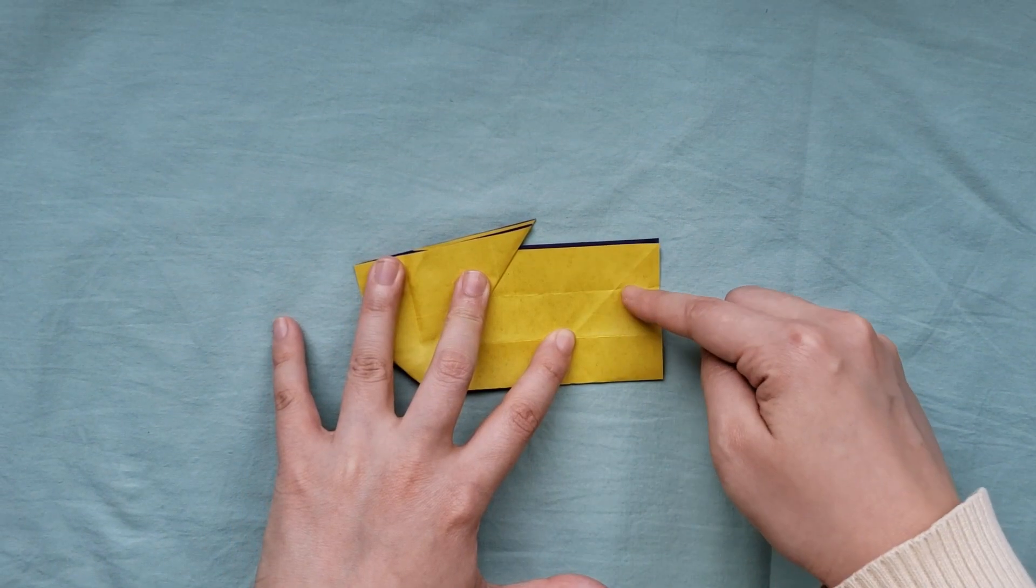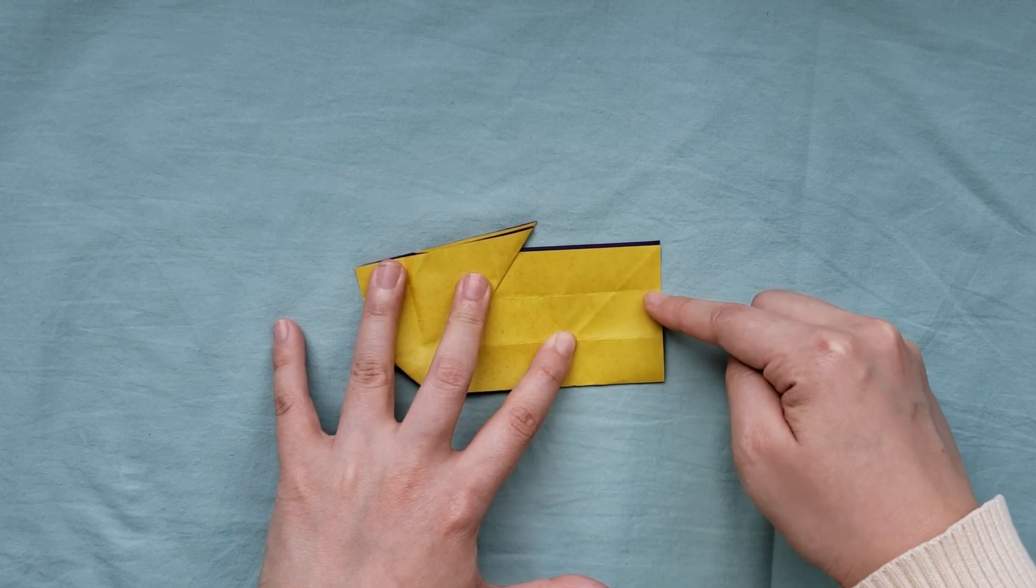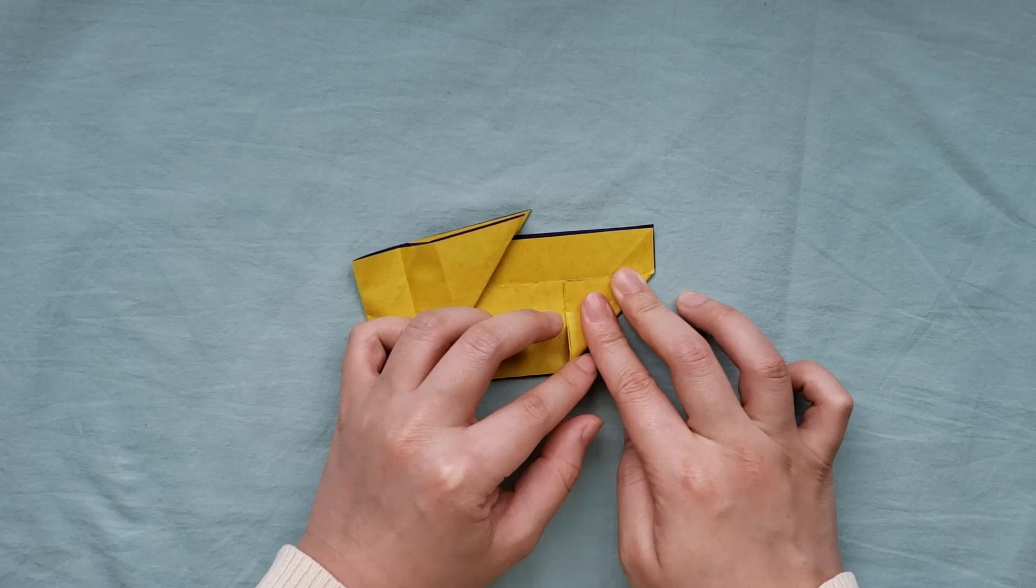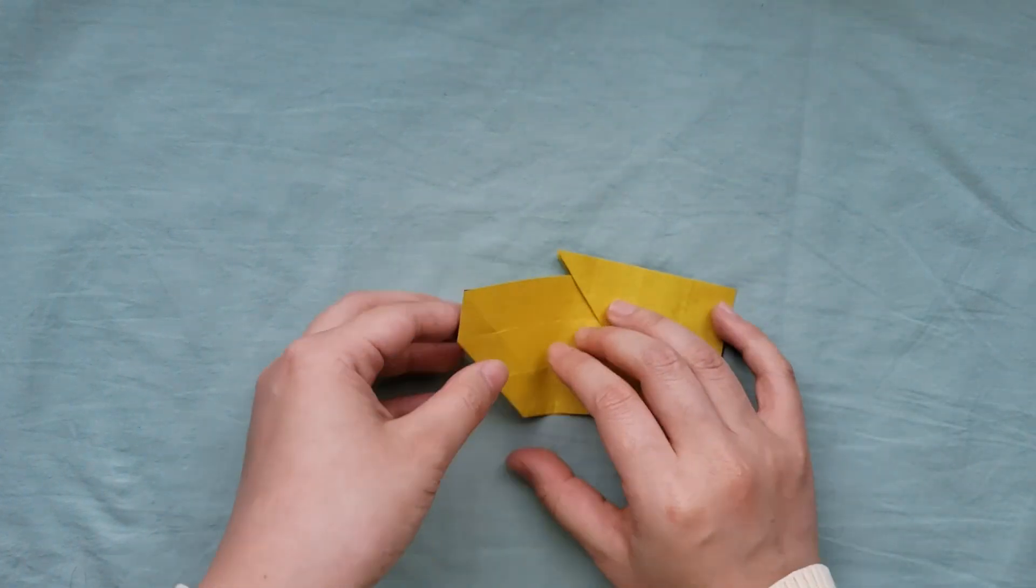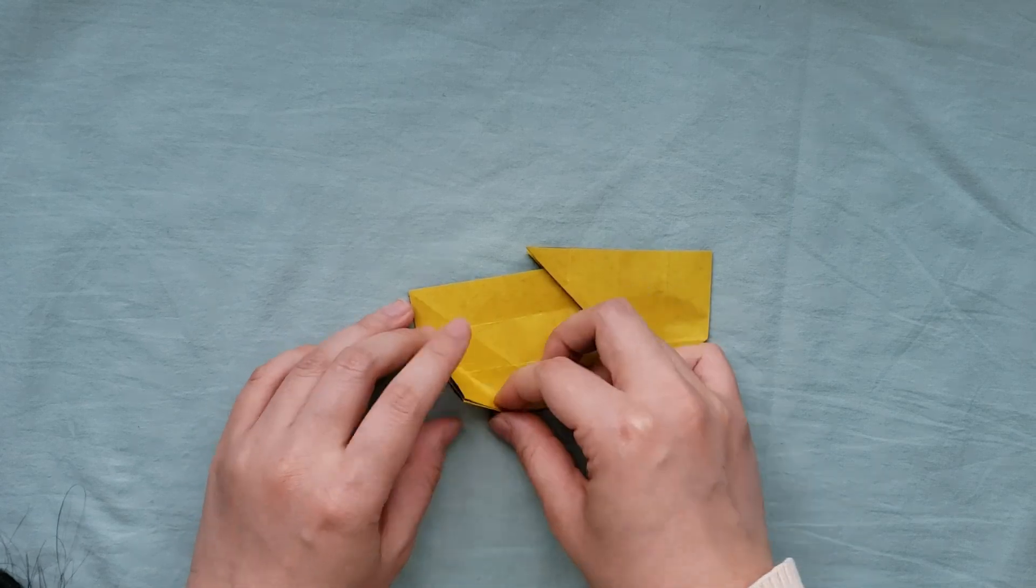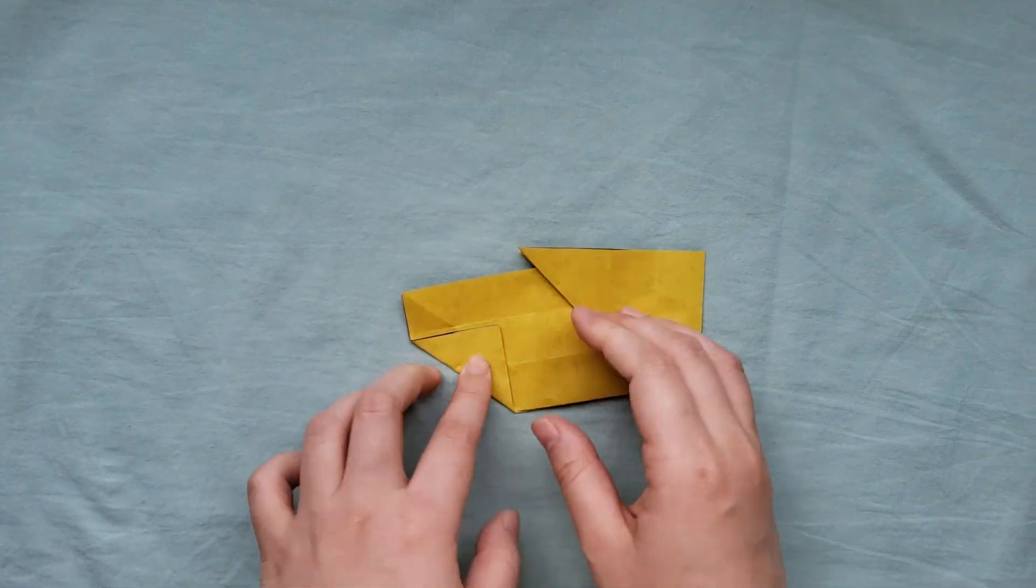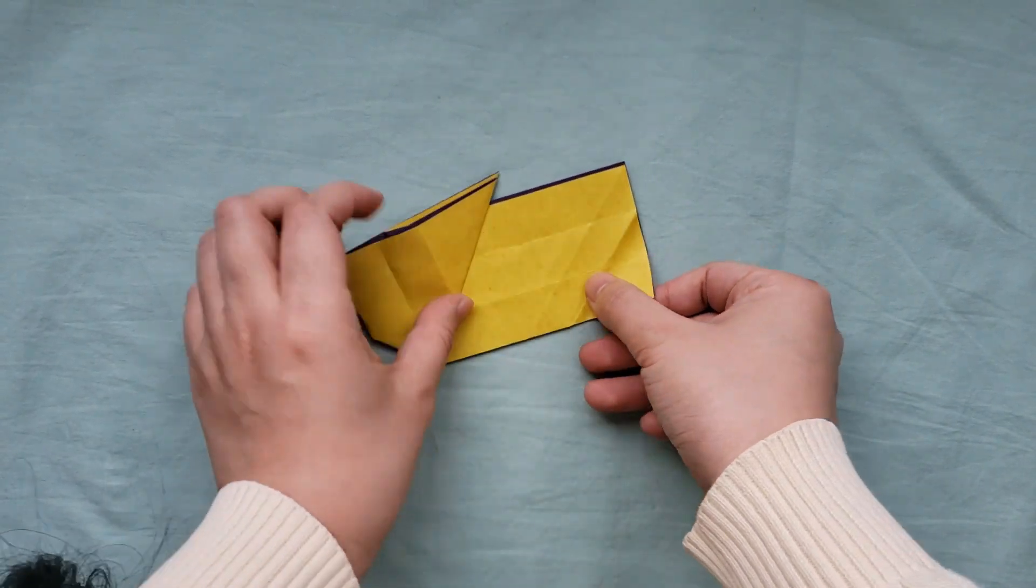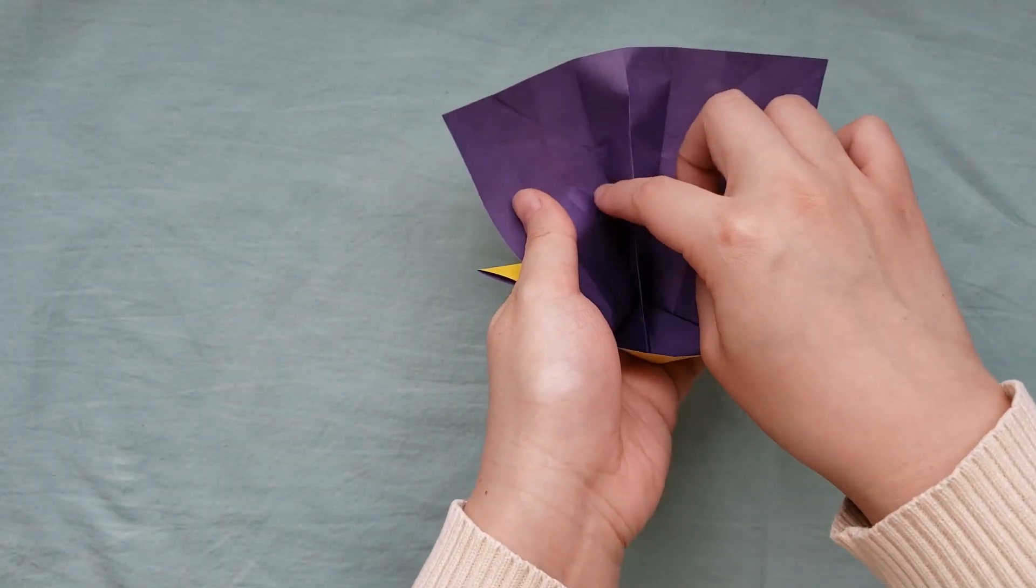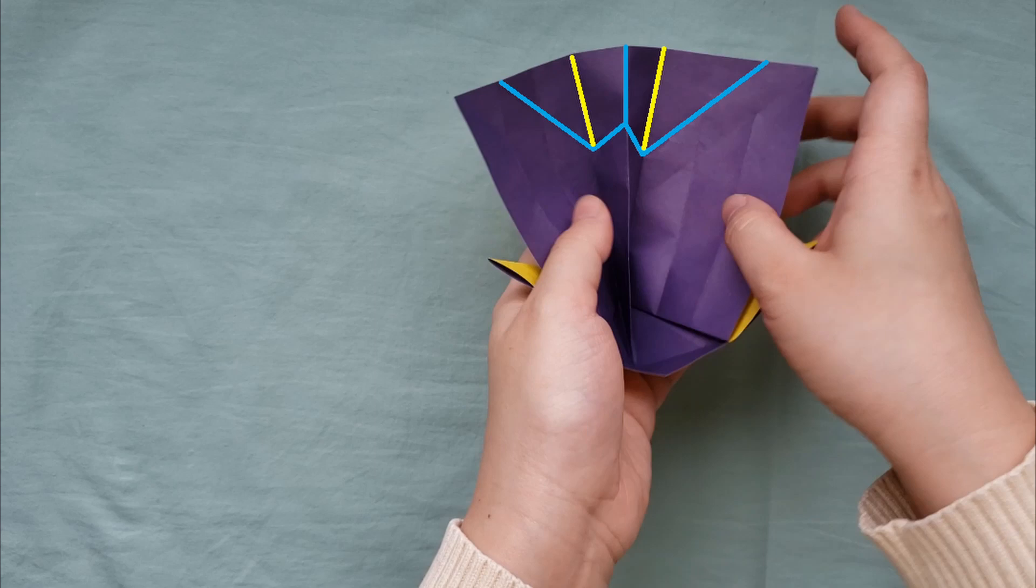Fold the bottom right corner up to the first crease. Unfold and reinforce the fold on the other side. Unfold and open up the bunny. This is one of the parts that may get a bit tricky. You should see a W shape fold on the paper.